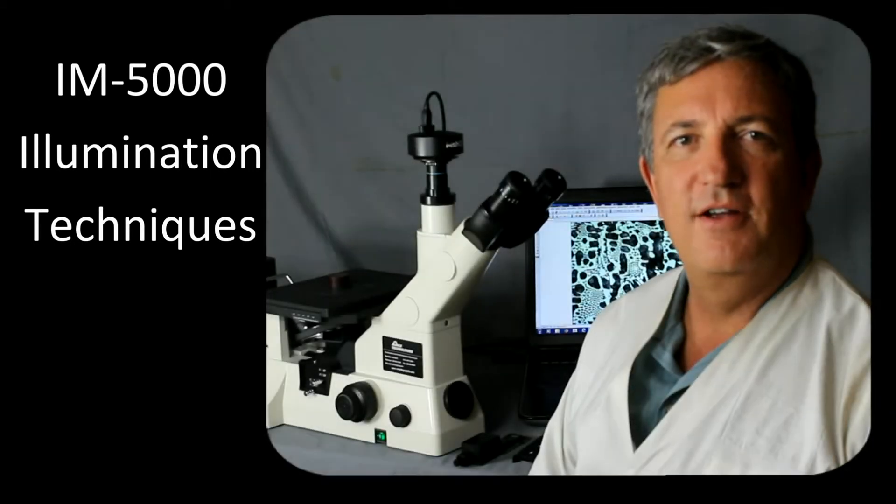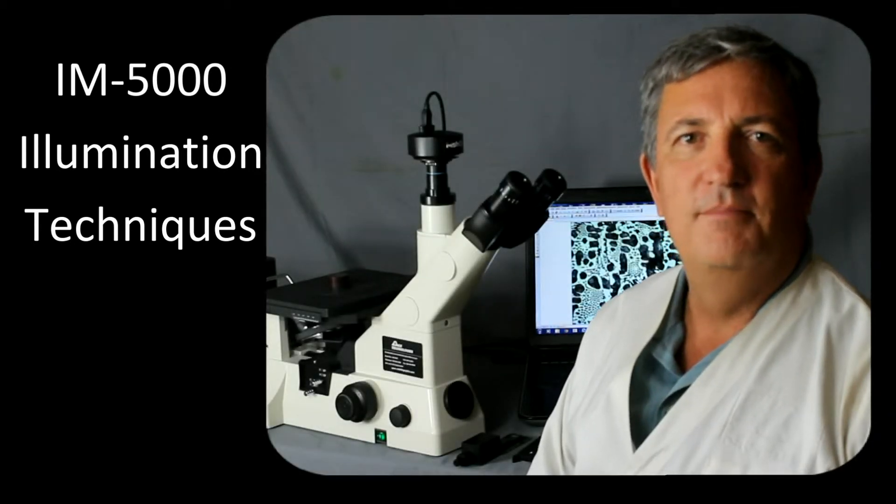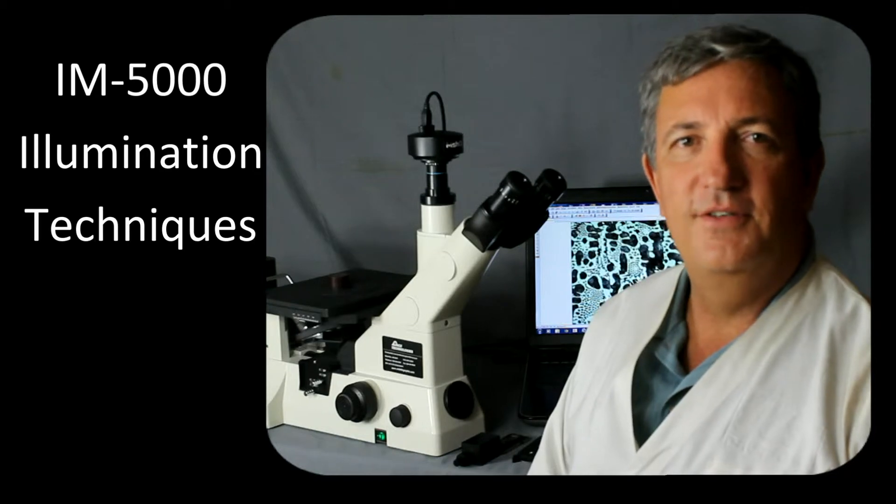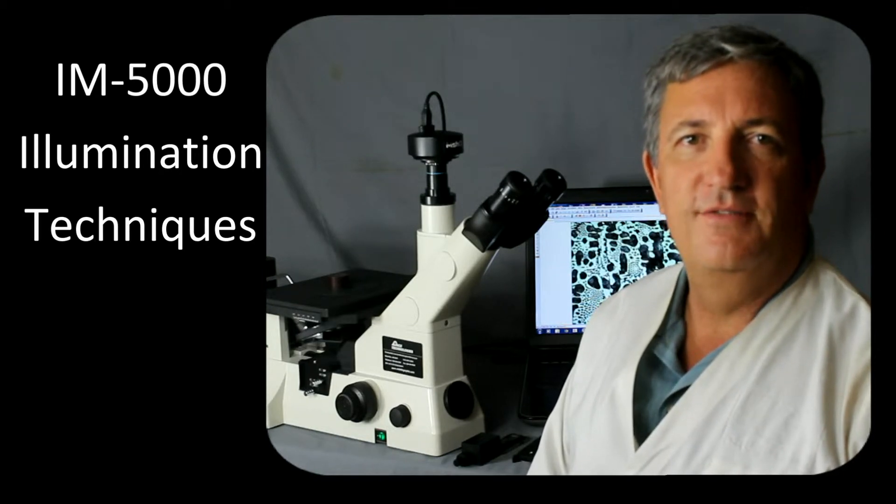The IM5000 metallographic microscope is a very useful microscope. It has a variety of different types of illumination systems including bright field illumination, dark field illumination, differential interference contrast, and polarized light.